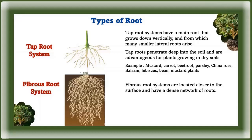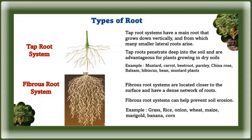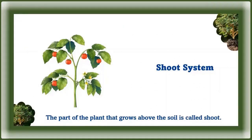Fibrous root systems are located closer to the surface and have a dense network of roots. Fibrous root systems can help prevent soil erosion. Examples include grass, rice, onion, wheat, maize, marigold, banana, and corn.